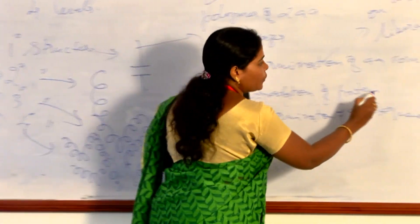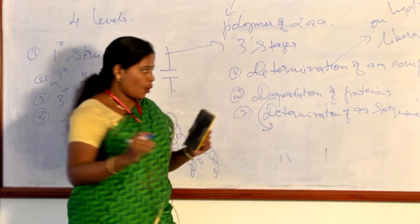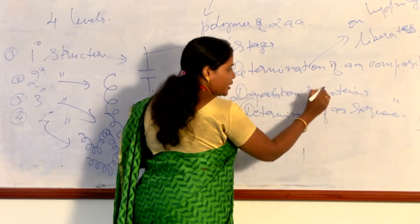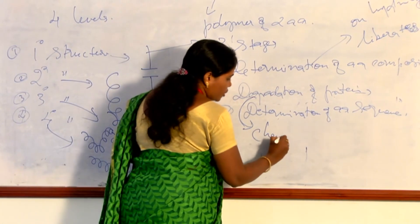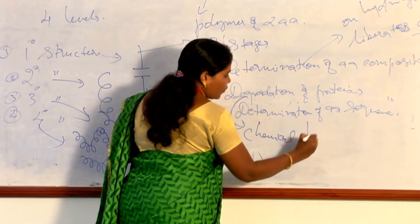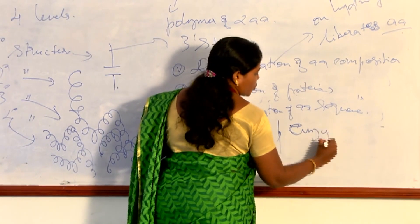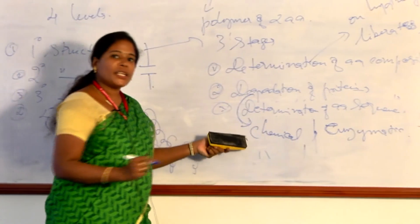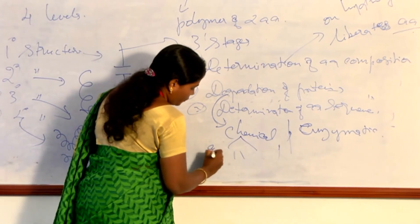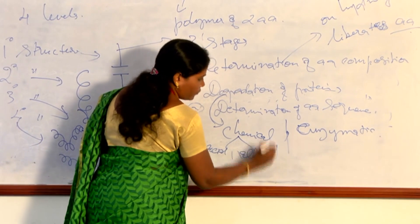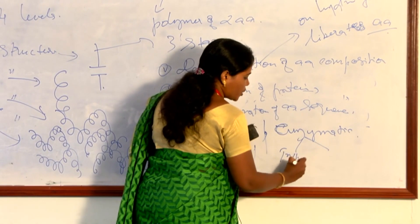Amino acids are linked by a peptide bond. To degrade a protein we need two types of cleavage: one is chemical cleavage and the other is enzymatic cleavage. For chemical cleavage, acid or alkali is used, and for enzymatic cleavage, trypsin or chymotrypsin is used.